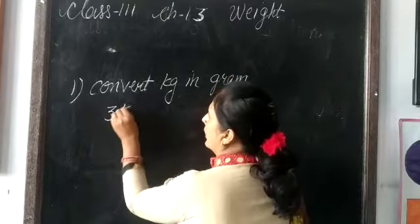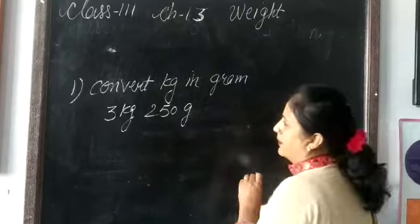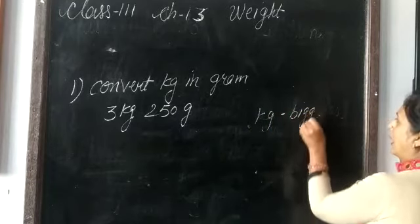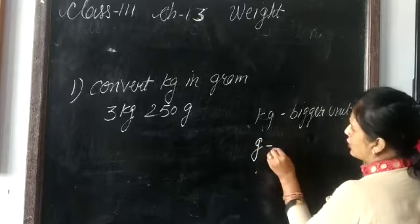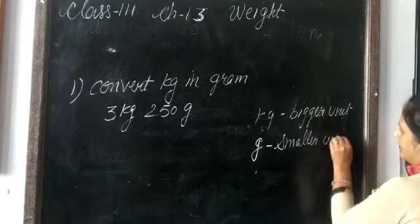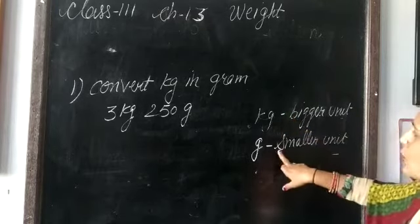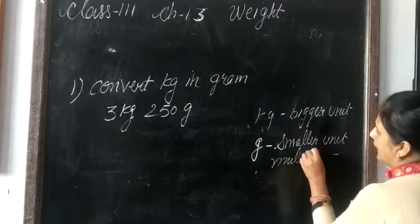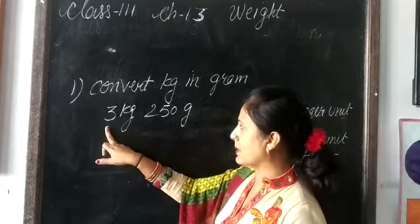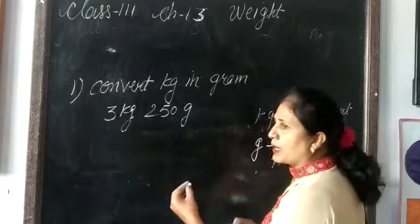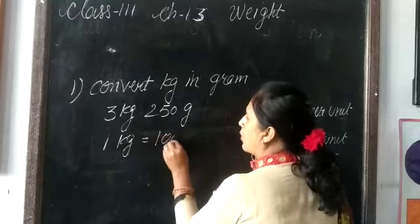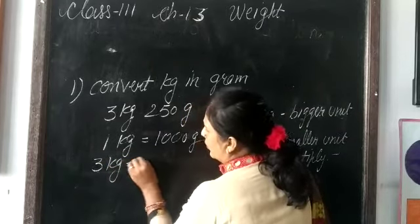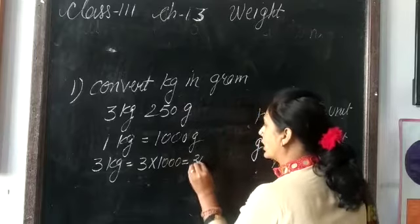Suppose we are given 3 kilogram 250 gram. Kilogram is the bigger unit of weight and gram is the smaller unit of weight. If we convert a bigger unit into a smaller unit, we will multiply. How many kilograms are given? 3 kilograms. 1 kilogram is equal to 1000 grams, so 3 kilograms is equal to 3 multiplied by 1000, which is 3000 grams.